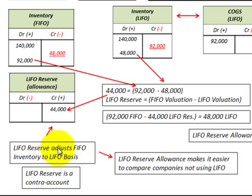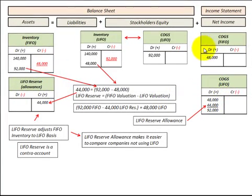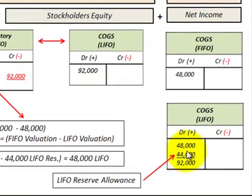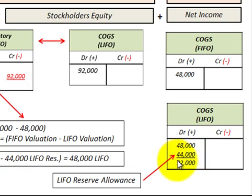This LIFO reserve adjusted our FIFO inventory to the LIFO basis. We can also adjust cost of goods sold from FIFO to LIFO by taking the $44,000 credit amount in our LIFO reserve and balancing it with a $44,000 debit to cost of goods sold. Adding $44,000 to our FIFO cost of goods sold of $48,000 gives us $92,000 cost of goods sold on a LIFO basis — which equals what we previously calculated for LIFO cost of goods sold.